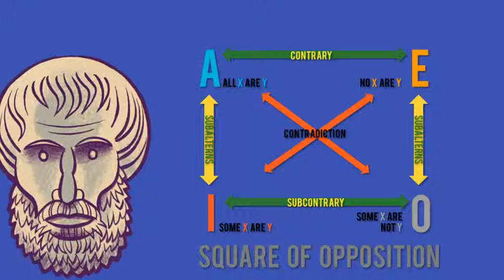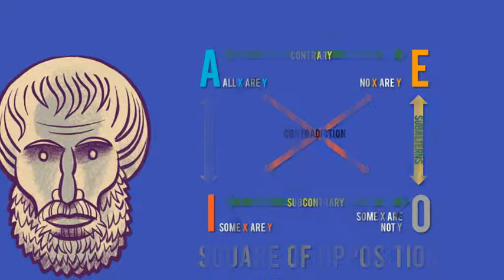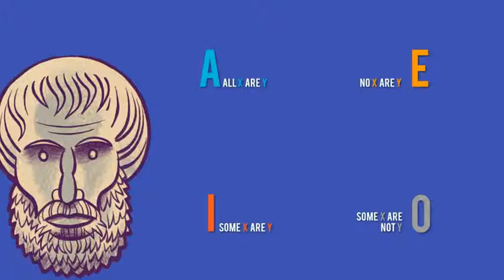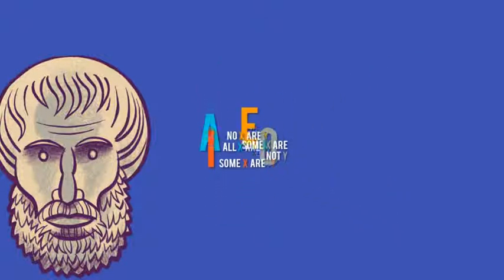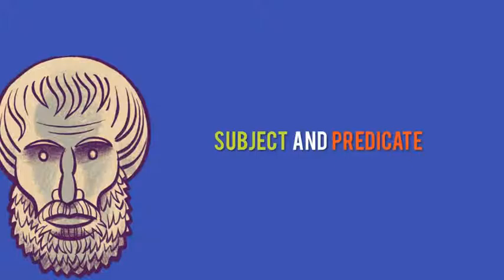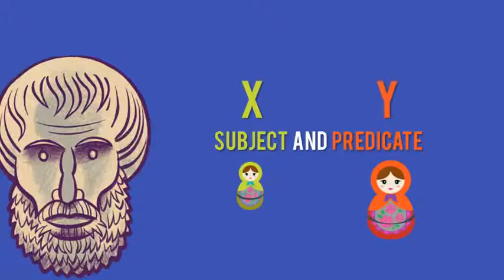So now let's apply this idea to a few examples, and see if we can dig a little deeper. The first step is to realize that all statements, A, E, I, and O, share a similar structure, and the structure is just basic grammar. Every full sentence has a subject and a predicate. In our example, let's make the green doll the subject, and the red doll the predicate. And we'll also use the variables X and Y.